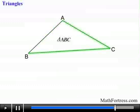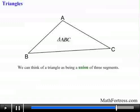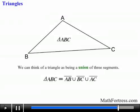If you recall from your algebra class, we often talked about sets. Well it turns out we can think of a triangle as being a union of three segments and can be denoted using set notation as follows: triangle ABC is equal to segment AB union with segment BC union with segment AC.